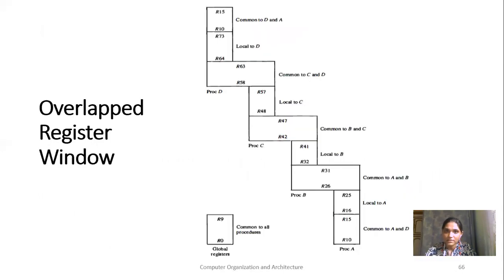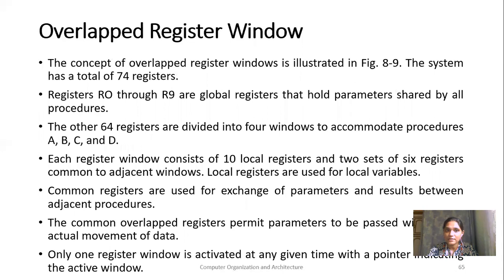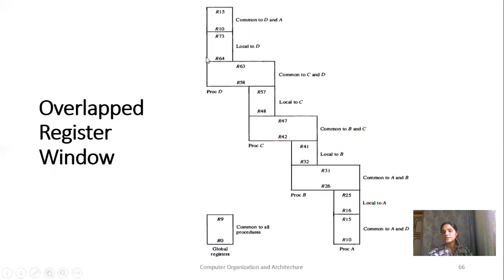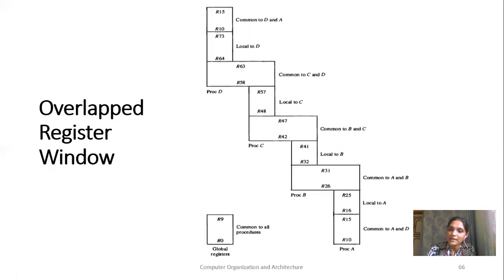Here is the overlapped register window with 74 registers, R0 to R73. The registers R0 to R9 are global registers that are common to all procedures. From R10 to R75, that is a total of 64 registers, are available for four windows known as A, B, C, and D. With four windows and 64 registers, each window will have a total of 16 registers, of which 10 registers are local to that procedure.